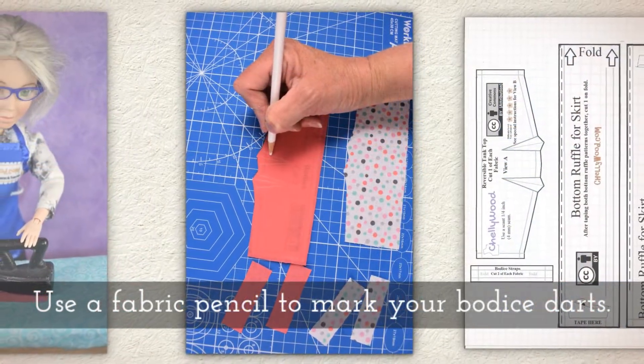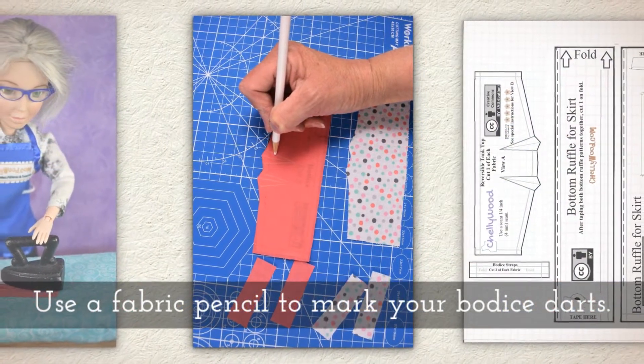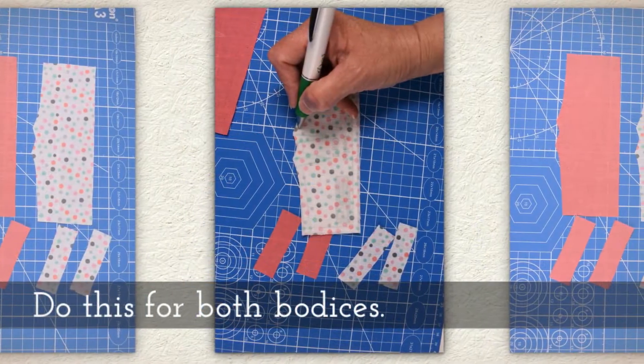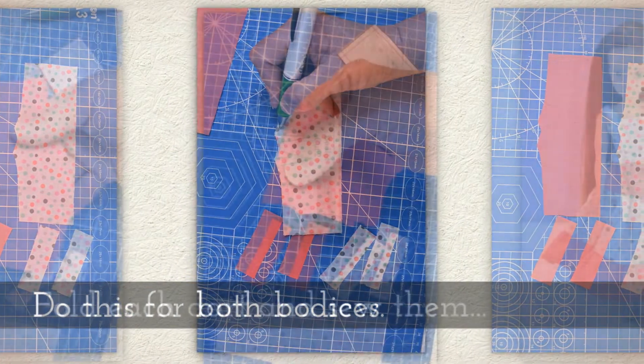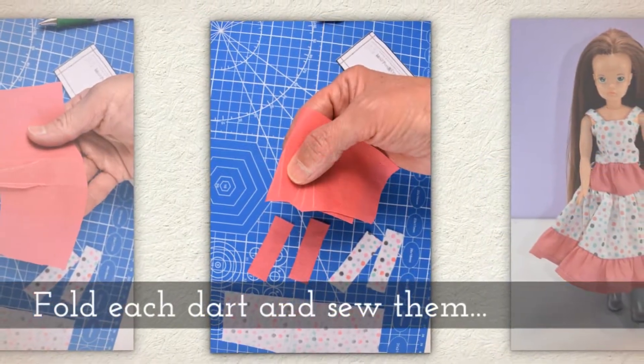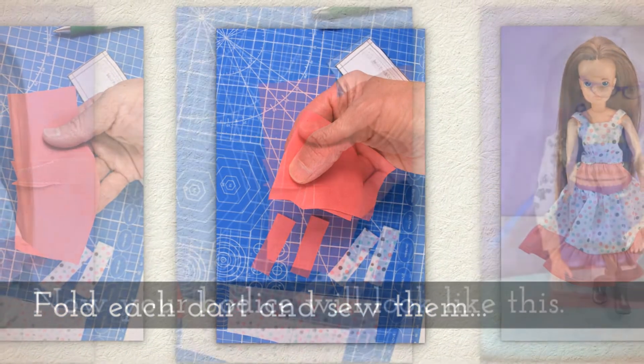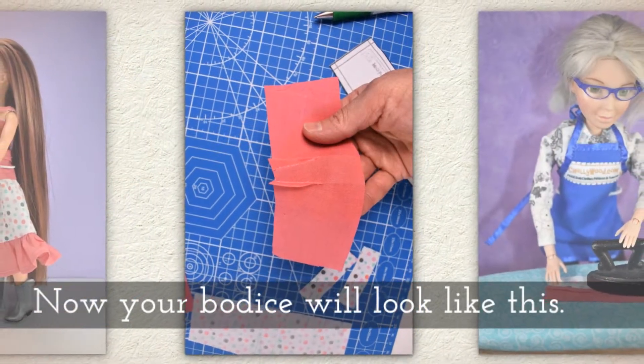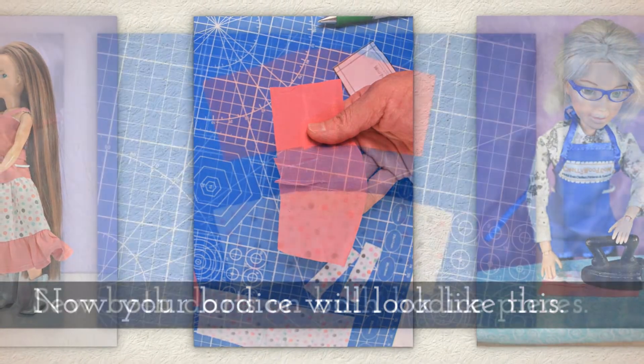Use a fabric pencil to mark your bodice darts according to the pattern. Do this for both bodices. Fold each dart and sew them. Now your bodice will look like this.